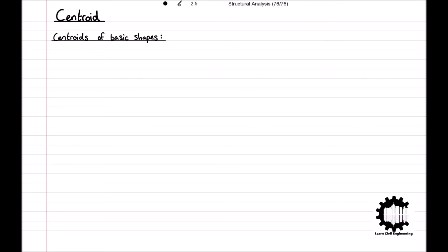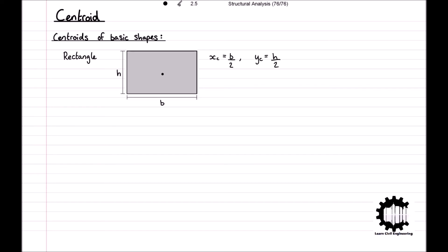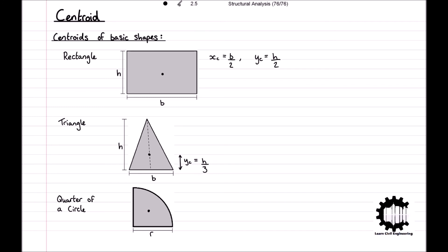For a rectangle the centroid lies along its two lines of symmetry: B/2 for the X coordinate and H/2 for the Y coordinate. For a triangle, the Y coordinate of the centroid is one third of the height from the base, equal to H/3. For a quarter circle, the X and Y coordinates of the centroid are both equal to 4R / (3π), where R is the radius. Although we did not require the last two shapes for this example, some sections will require this information when finding the centroid, so it is recommended to commit these to memory.